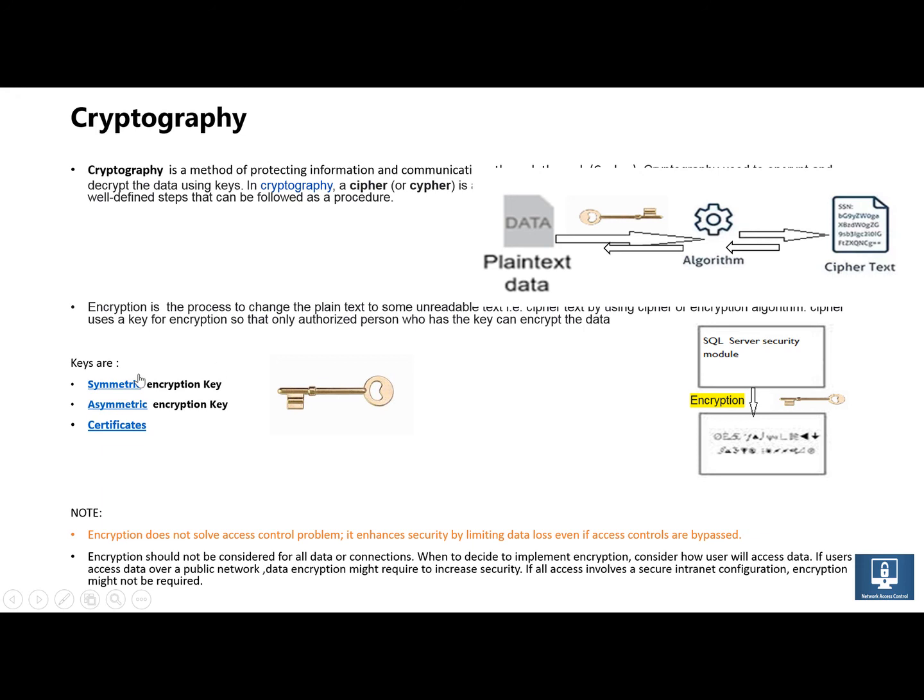Encryption is carried out by using keys. These keys are symmetric encryption keys, asymmetric encryption keys, or certificates. By using these or a combination of these, encryption can be implemented. Now we will discuss these keys in detail.